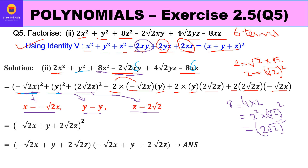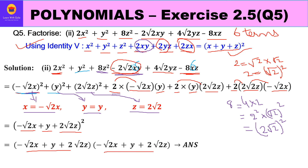Checking: 2×(−√2)·x·y = −2√2·xy ✓; 2×1×2√2·yz = 4√2·yz ✓; 2×2√2×(−√2)·xz = 2×2×2·(−1)·xz = −8xz ✓. All terms verified. Therefore the factors are (−√2·x + y + 2√2·z)², meaning you write those factors multiplied by themselves. This is how we solve the second part using Identity 5.